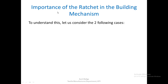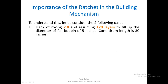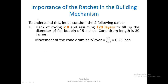Now let us see the importance of the ratchet in the building mechanism. Suppose the hank of roving is 2, and assuming there are 120 layers to be filled for the full bobbin diameter of say 5 inches, and the cone drum length is 30 inches. The movement of the cone drum belt per layer is 30 divided by 120, meaning every time the belt has to shift by 0.25 inches.